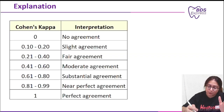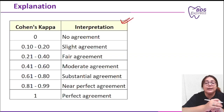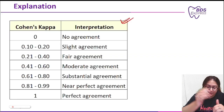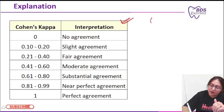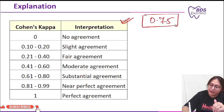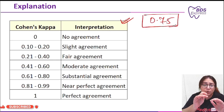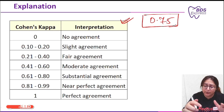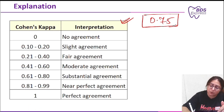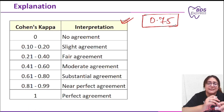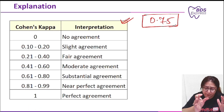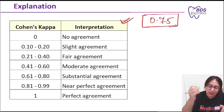There is one table for interpretation. Our value was 0.75, as given in the question. We are not going into depth on how to calculate it — that statistic is not important for you. You just need to know the interpretation.